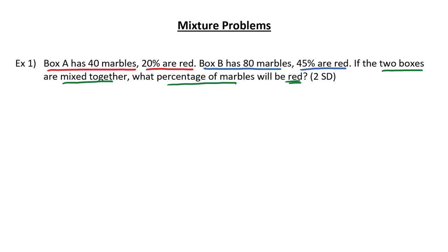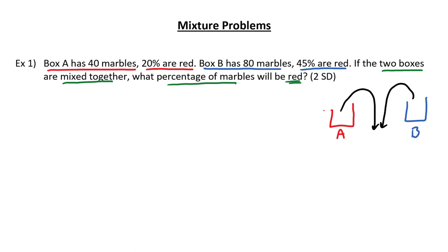What can be helpful is drawing a little diagram to explain what's going on here. So we have box A, we have box B, and I'm going to mix those two boxes together and make a new box — we'll call it box C. The information: 20% are red in box A, 45% are red in box B, and we want to know what percentage is red in our final one. Drawing a diagram can help you visualize what's going on.